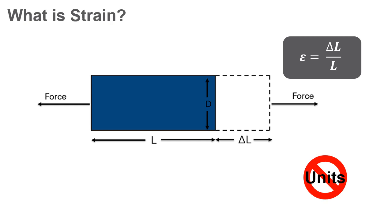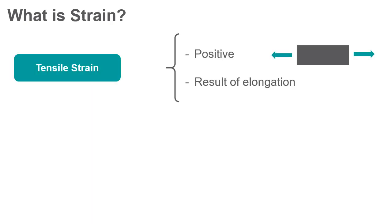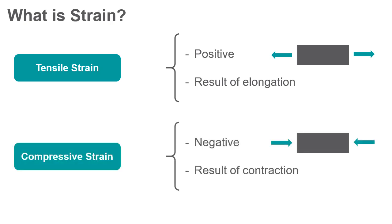Strain is dimensionless. Tensile strain is positive and is a result of elongation. Compressive strain is negative and is a result of contraction.